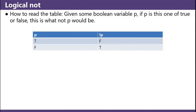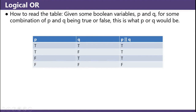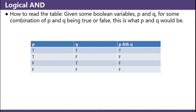Logical not: given some Boolean variable p, if p is true, not p is false; if p is false, not p is true. Logical or: given Boolean variables p and q, for some combination of p and q being true or false, this is what p or q would be. The only way p or q is false is if they're both false. Logical and: p and q is only true if they're both true.